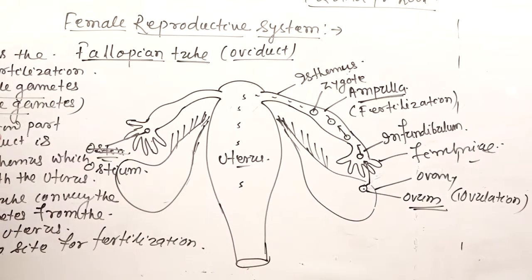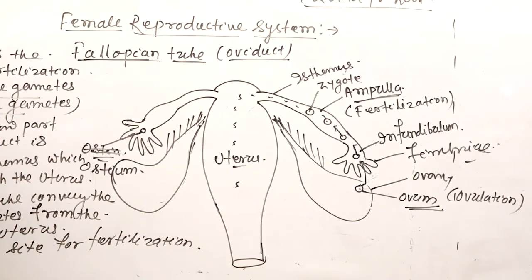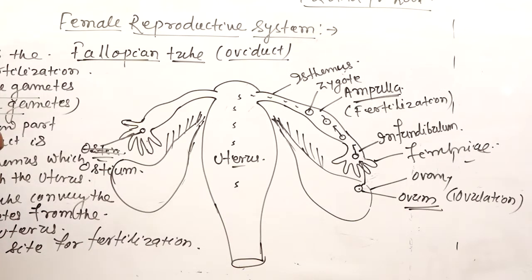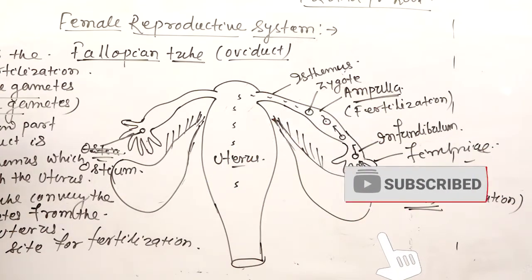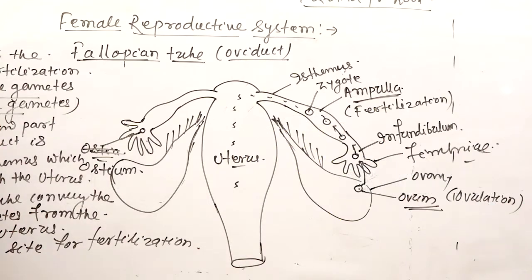In the anterior region there is a funnel-shaped structure called the infundibulum, with an opening — a pore-like structure called the ostium. Around the ostium there is a finger-like projection called the fimbriae. The ostium receives and picks up the ovum released from the ovary, and the funnel-shaped structure along with the fimbriae helps to pick up the ovum towards the fallopian tube.